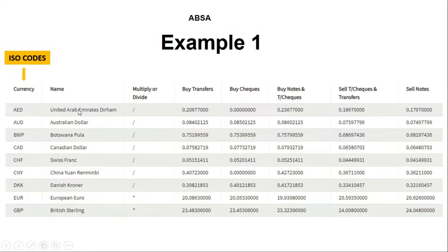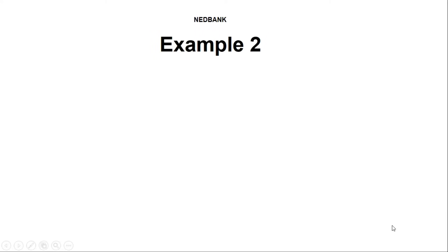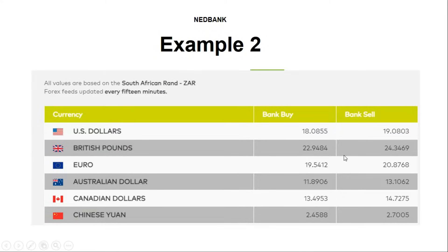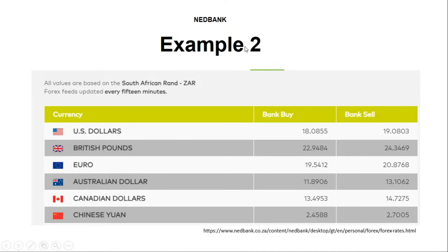When dealing with foreign exchange calculations, you start on the left by identifying the currency you are working with, then make your way across to the right to the relevant column — whether you're dealing with travellers' cheques or notes. The second example is a simpler currency sheet from Netbank: you have your currency, your BBR, and your BSR. Identify the currency you're working with and move across to the right to use BBR or BSR depending on the scenario.